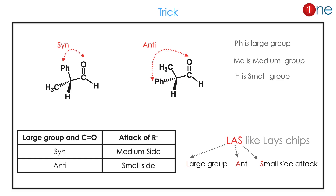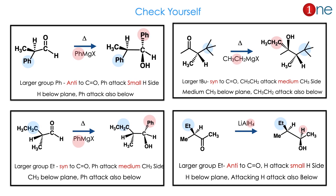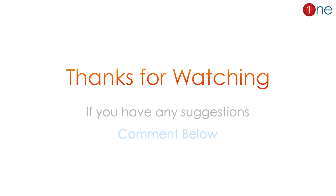This is easy to remember by the acronym LASE: Large group Anti, Small side attack. Here are practice problems — check yourself with four examples. Remember: large group and C=O are anti means small side attack; syn means medium side attack. That's all from this video — thanks for watching.